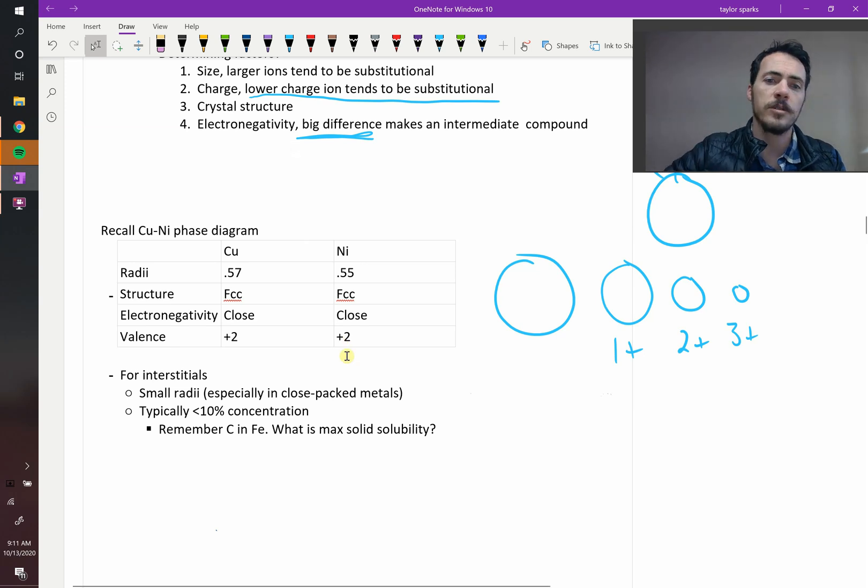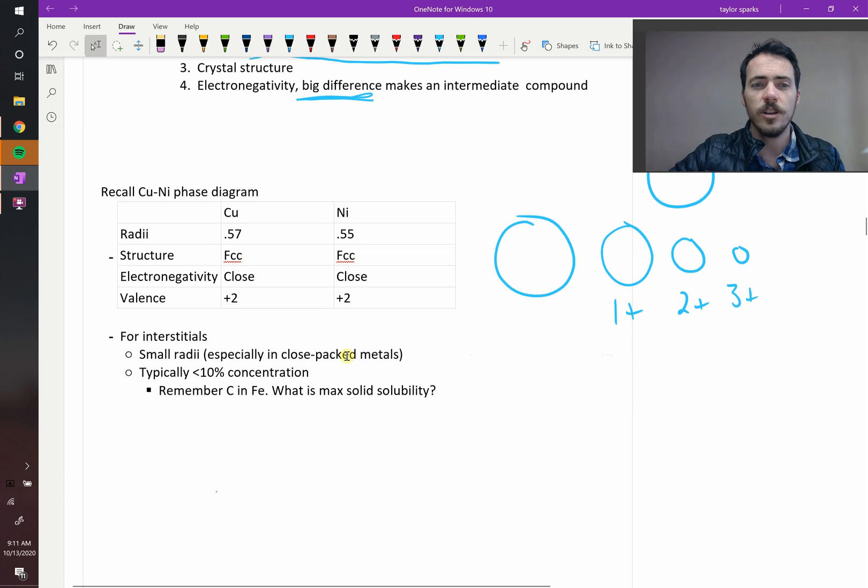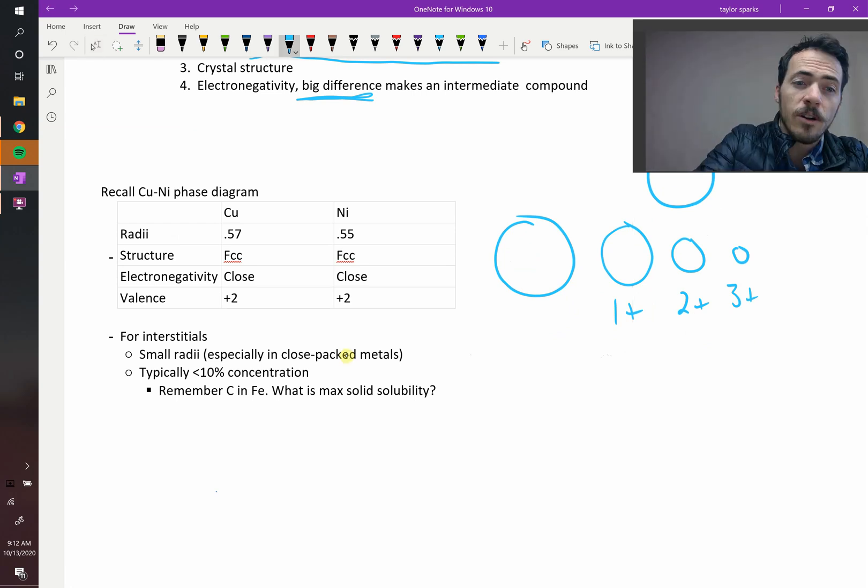So the opposite then would be true for interstitials. You're looking at really small radii impurities, so things like carbon, hydrogen, maybe nitrogen. Those are going to be a little bit more likely to be interstitials because they're going to be really small relative to the larger other ions. And typically, even if they are small, it's hard to dissolve more than, say, 10% concentration into a lattice because it's still straining the lattice. Stuffing these into the interstitials is straining the lattice,